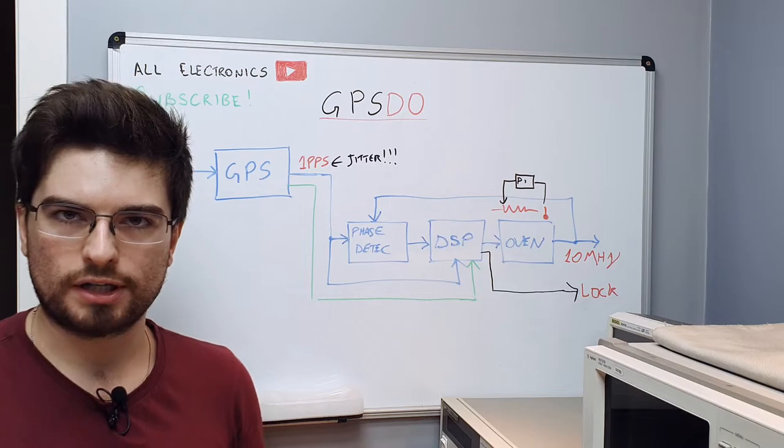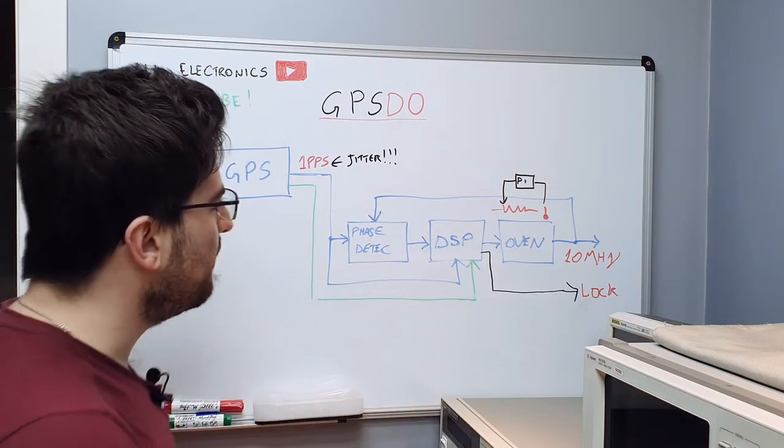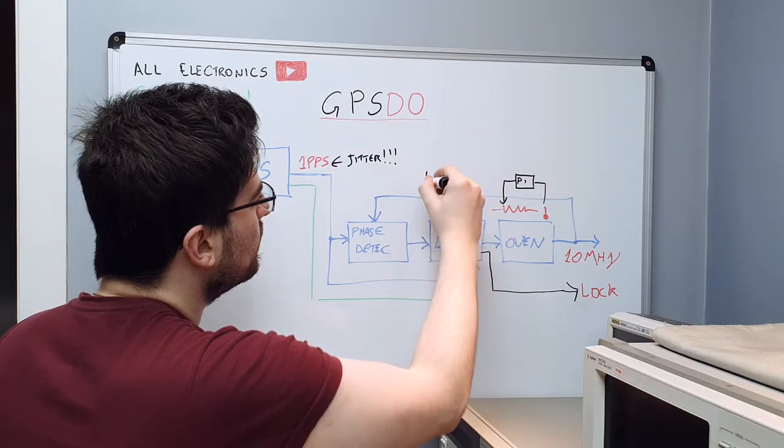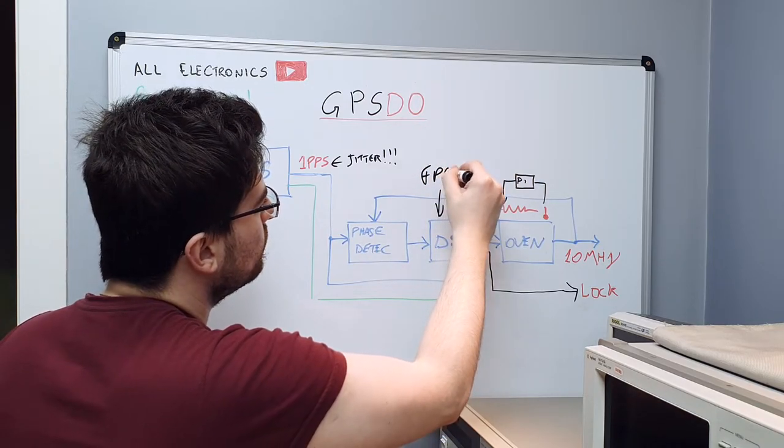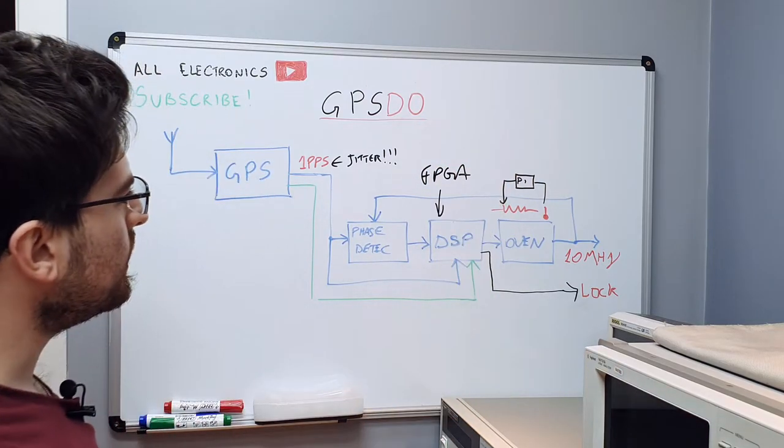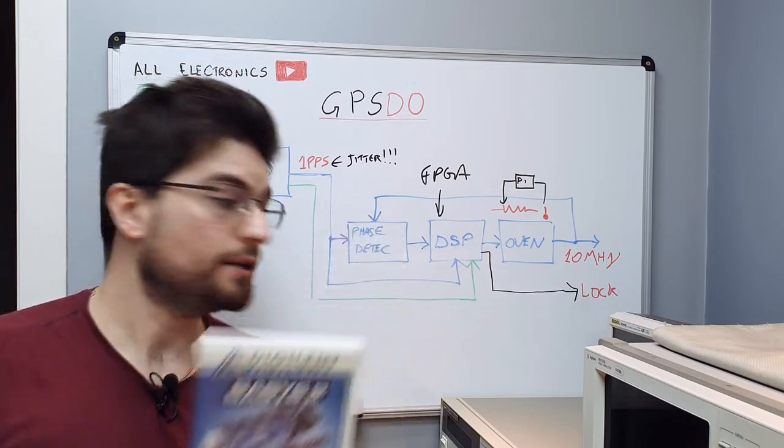we're gonna start the DSP on FPGA. So here we're gonna use a FPGA, Xilinx one, I think. This is the FPGA we're gonna use.